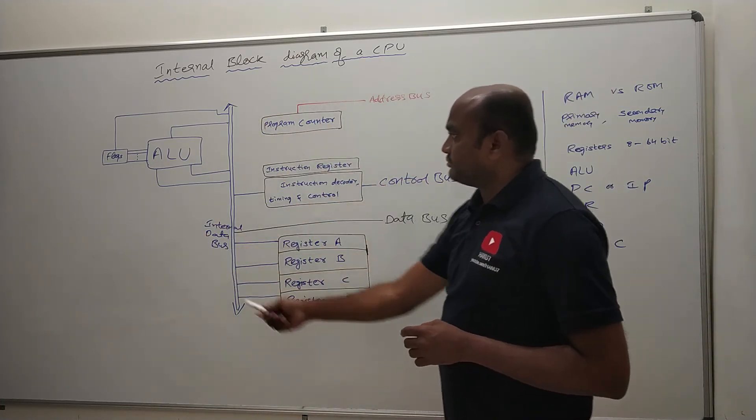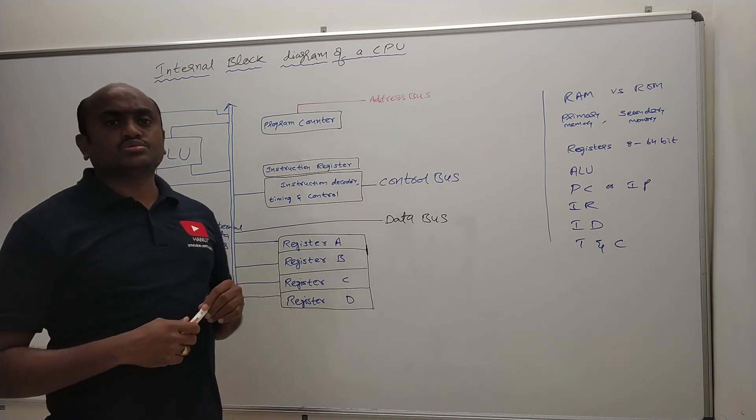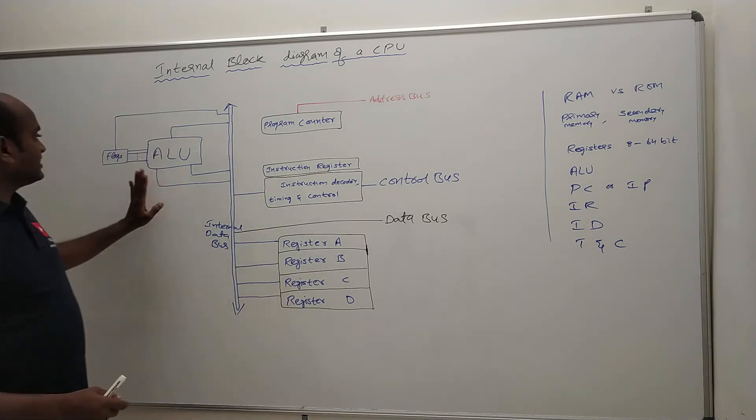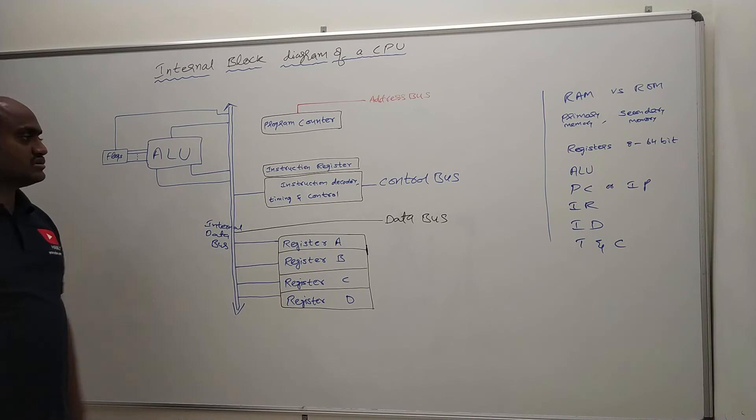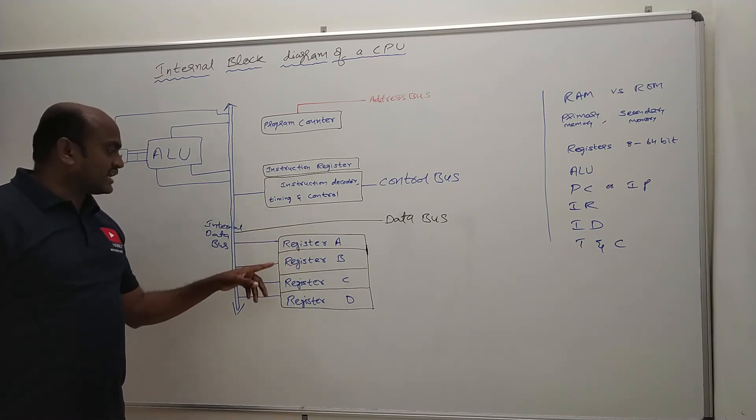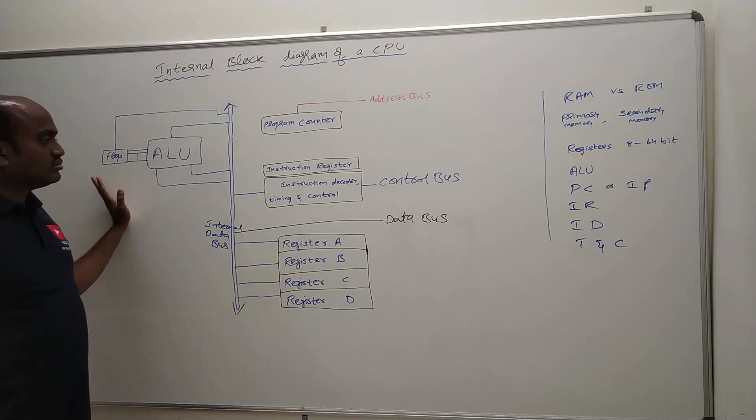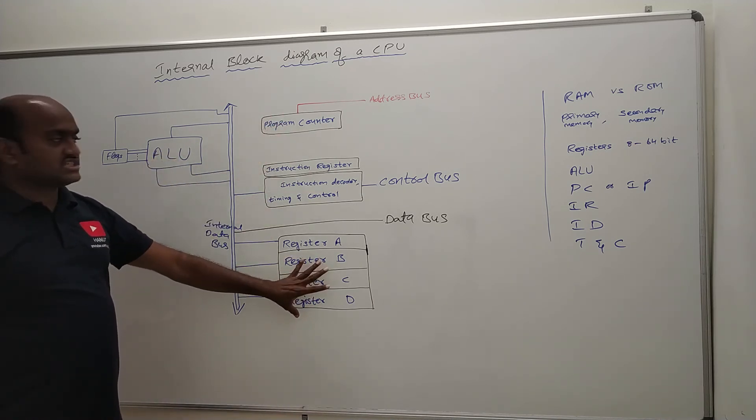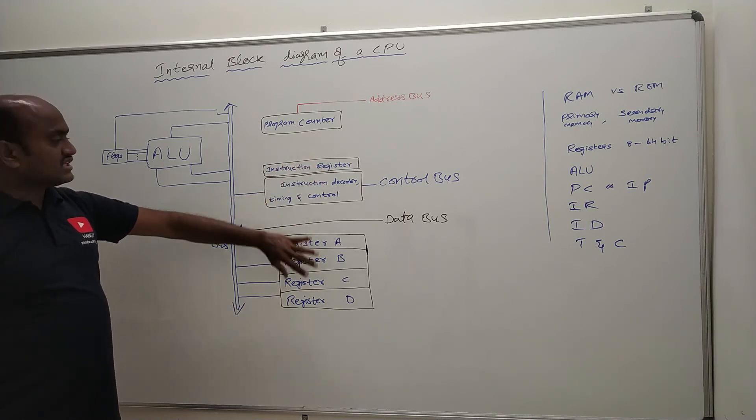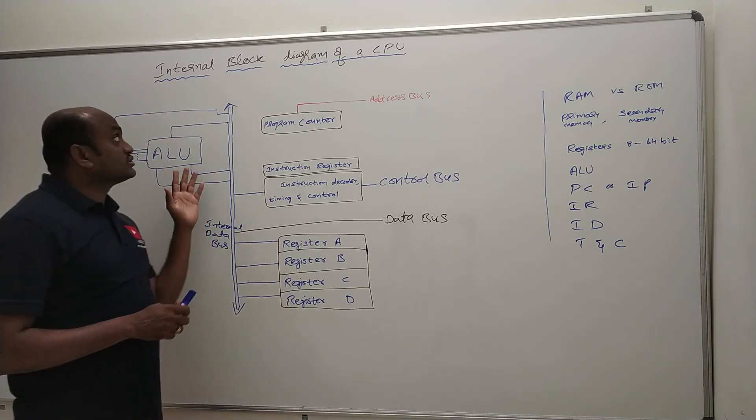So this diagram will give us a clear picture of any CPU. What does a CPU have? Inside that CPU you can find ALU, flag registers, program counters, instruction registers, instruction decoder, timing and control signals, and then register set. To summarize, I told you that there is an internal bus here which will be helping the CPU to get the data from primary and secondary memories with the help of these register sets, program counters and instruction decoder. Then it will be given to ALU. ALU will be performing mathematical and logical operations. So that is about the internal block diagram of a CPU.